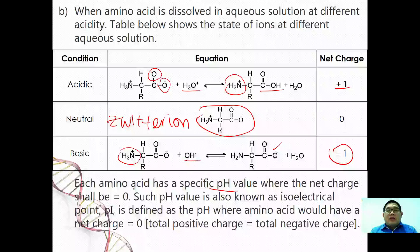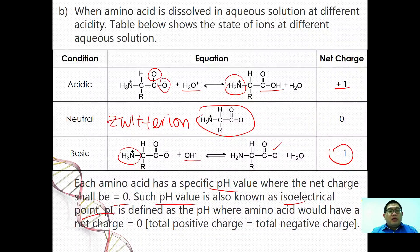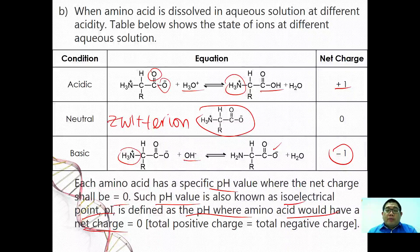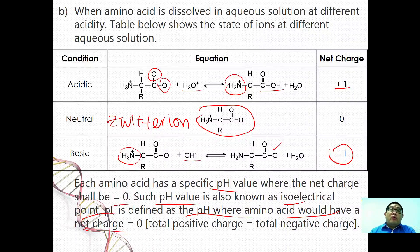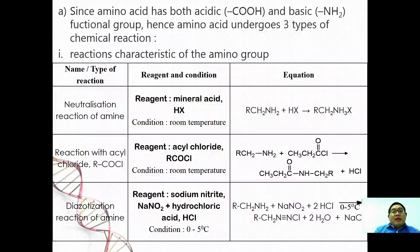Each amino acid has a specific pH value where the net charge is equal to zero. Such pH is also known as isoelectric point, where it is defined as the pH where amino acid will have a net charge equals to zero. More information you can find out on your own, so I'm not going to explain this further.